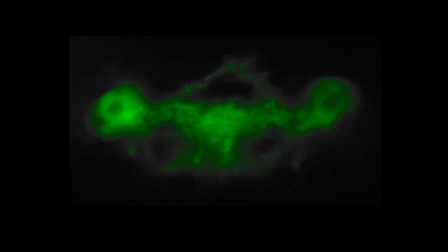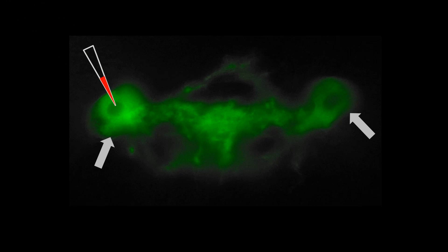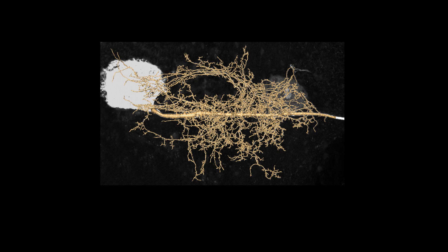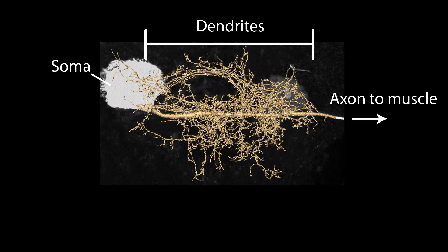This is the motor neuron after we labeled it genetically with green fluorescent protein on both sides of the ventral nerve cord. We can now use a sharp glass microelectrode filled with fluorescent dye to label the neuron intracellularly, then obtain confocal image stacks, which we use for image segmentation to obtain three-dimensional reconstructions, allowing precise quantification of these dendrites.